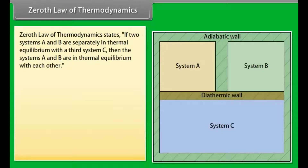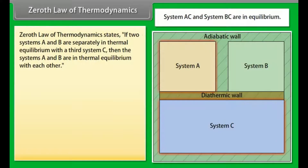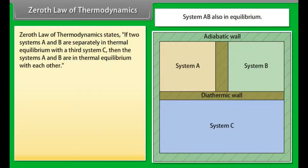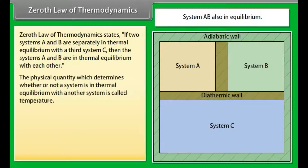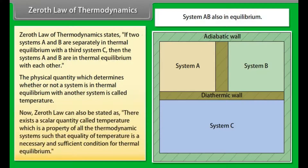The Zeroth law of thermodynamics states: if two systems A and B are separately in thermal equilibrium with a third system C, then systems A and B are in thermal equilibrium with each other. The physical quantity which determines whether a system is in thermal equilibrium with another is called temperature. The Zeroth law can also be stated as: there exists a scalar quantity called temperature, a property of all thermodynamic systems, such that equality of temperature is a necessary and sufficient condition for thermal equilibrium.